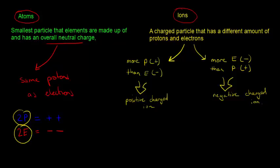Ions are different. If we have ions, they're defined as a charged particle — not a neutral particle, but a charged particle that has a different amount of protons and electrons. Either we have more protons, so more positive charge than electrons, giving a negative charge, and then we have a positively charged ion.